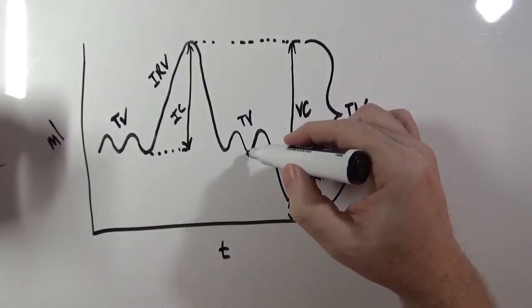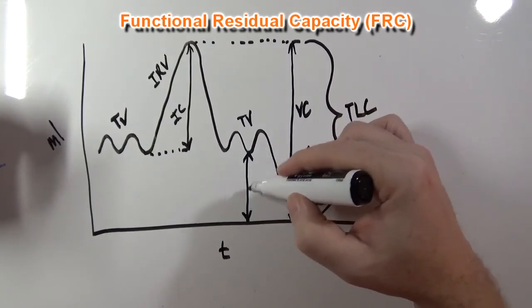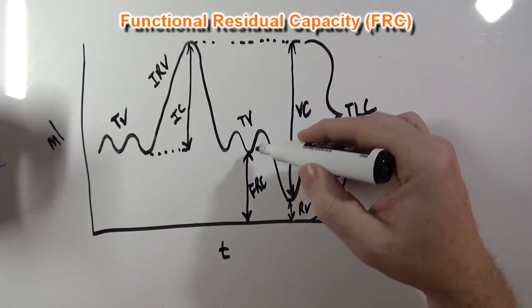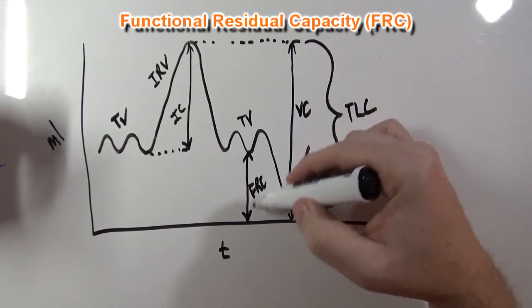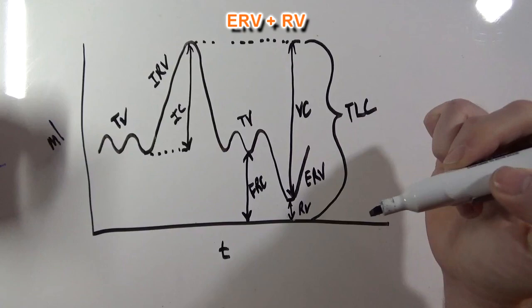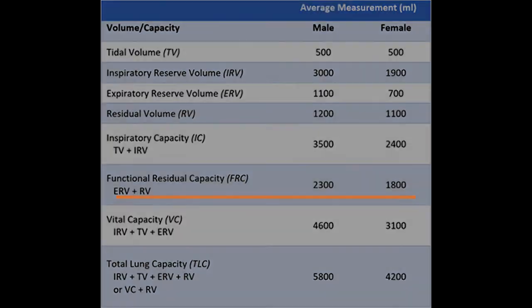This volume here is functional residual capacity. Functional residual capacity is the result of adding expiratory reserve volume plus residual volume. The average functional residual capacity for a male is 2300 milliliters, and for a female is 1800 milliliters.